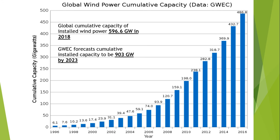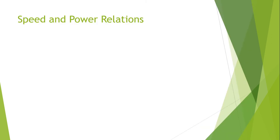Global cumulative capacity of installed wind power was expected to reach around 596.6 gigawatts in 2018. If the exponential growth and research and development in the wind energy area continues, the forecast of cumulative installed capacity is expected to be 903 gigawatts by 2030.